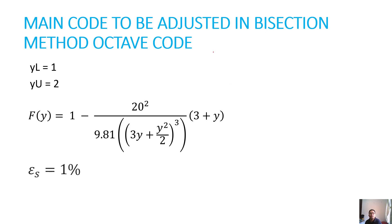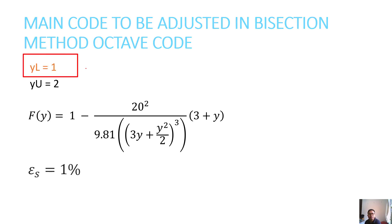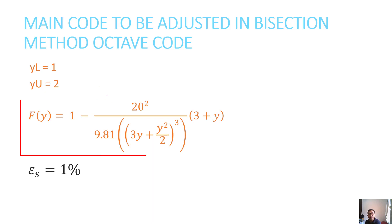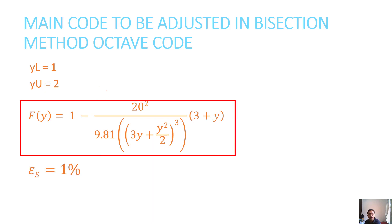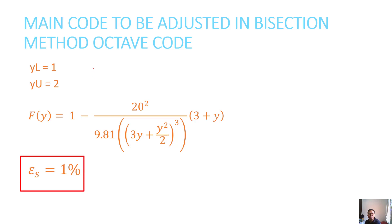How to use and adjust your bisection Octave code: you will only adjust certain parameters — yl equal to 1, yu equal to 2, the definition of your function f(y), and also epsilon_s. These are the main parameters you will change in the given bisection methods code provided in the lecture.